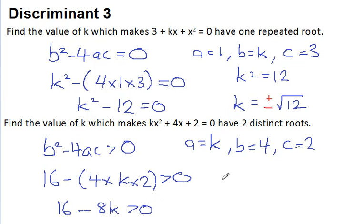And then if I say, take away 16 from both sides, then I have minus 8k is greater than minus 16. So if I divide now both sides of this equation by minus 8, then I get k on this side. And minus 16 divided by minus 8 is positive 2.